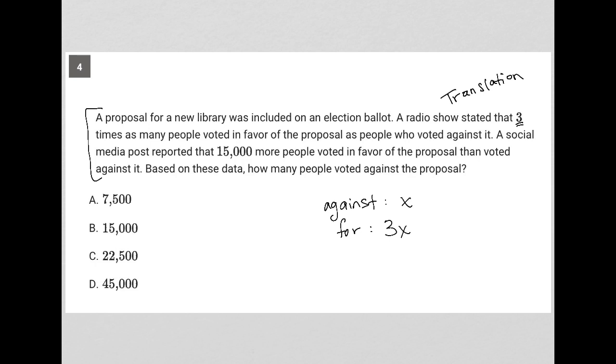The next sentence says a social media post reported that 15,000 more people voted in favor of the proposal than voted against it. So for was equal to X plus 15,000. We have two representations for the number of votes for the proposal. It's three times X, but it's also 15,000 more than X. The next sentence says, based on these data, how many people voted against the proposal?